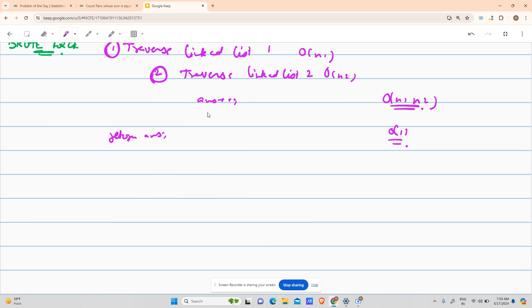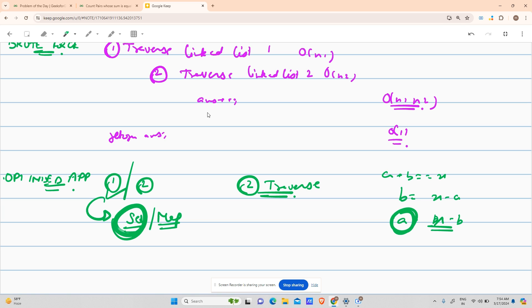But let's look at the optimized approach. The optimized approach tells me that for either list one or list two, store the elements in a data structure. Let's say you can store in set or in map, that is your wish. What you will do is you will traverse the other list. Suppose you took all the elements of list one and inserted them into a set, now traverse list two.